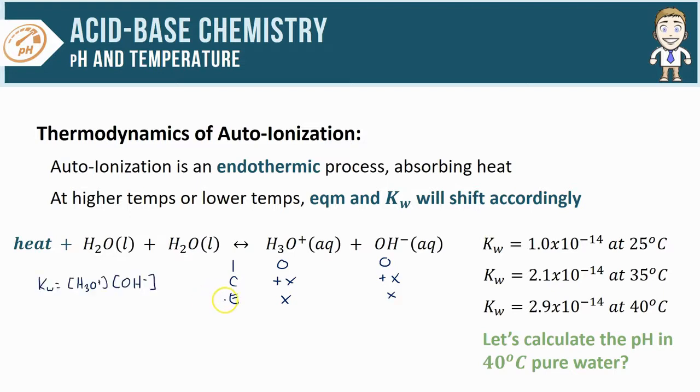Next I'll take that equilibrium row of the ICE table and plug it into my K expression along with the value for Kw itself. We end up with an expression that looks like this.